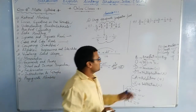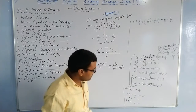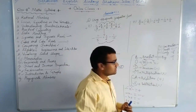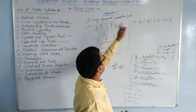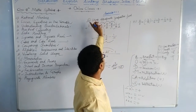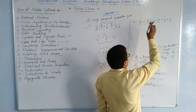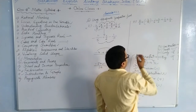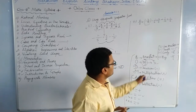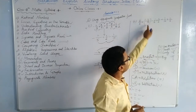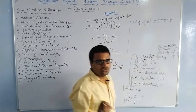I hope the BODMAS formula is now very clear. Now we will apply this concept to the second part of question number one. Here a bracket is also involved — specifically a small bracket. So first we need to know the rules of how to break a bracket.